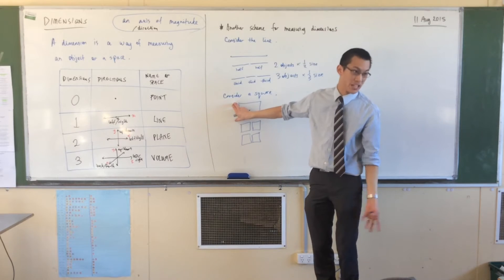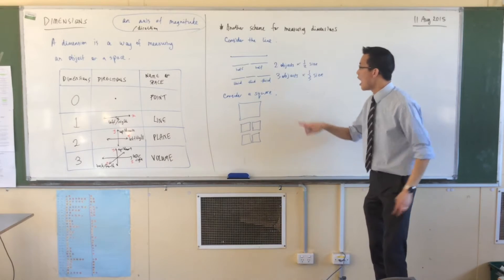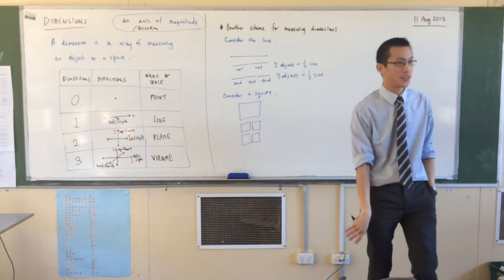So if this was like 10 units long, this would be 5, 5, 5, 5. I don't have two objects or two components that are half the size anymore, do I? How many do I have? I have four objects.